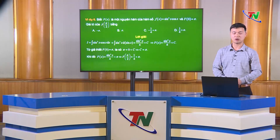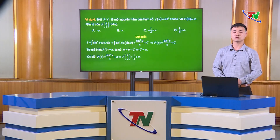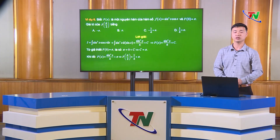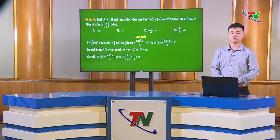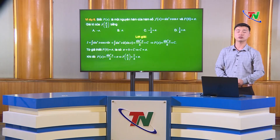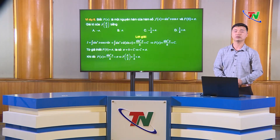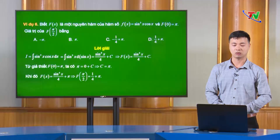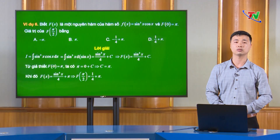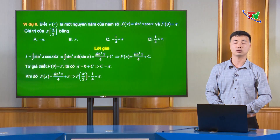Trên đây là 3 ví dụ minh họa cho dạng số 2 — tìm nguyên hàm bằng phép đổi biến số. Trong dạng này các em phải nhận dạng được khi nào dùng phép đổi biến: khi biểu thức dưới dấu nguyên hàm chứa 2 đại lượng u(x) và u'(x), các em có thể đặt t = u(x). Ngoài ra có thể sử dụng biến đổi vi phân để làm giảm độ phức tạp và lời giải ngắn gọn hơn.